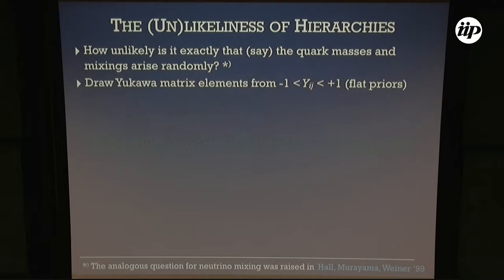This is the problem. Let's ask how unlikely it really is that we have such a pattern purely by chance. The analogous question for neutrino mixing goes by the name of Neutrino Anarchy and has been under investigation for quite a while. For the quarks, there has not been much effort in that direction because it's really, really unlikely.